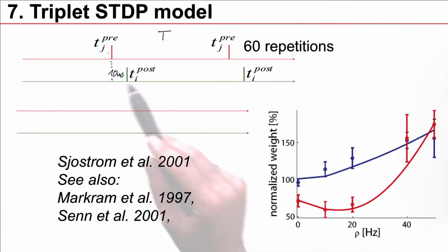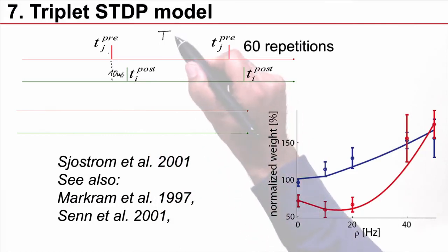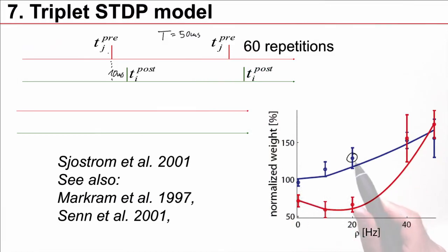And if the timing was 10 milliseconds and if the repetitions are done at 20 Hz, which means every 50 milliseconds, then you get an LTP result which is characterized at this point. Weights that had previously a normalized weight of 100 now have a weight of roughly 130. But this result has an additional parameter and that's the repetition period or the repetition frequency.